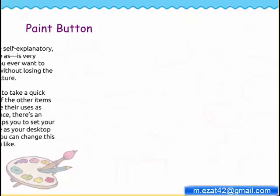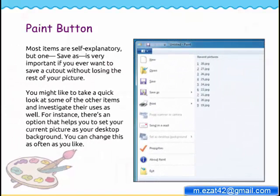Most items are self-explanatory, but one — Save As — is very important if you ever want to save a cutout without losing the rest of your picture. You might like to take a quick look at some of the other items and investigate their uses as well. For instance, there's an option that helps you set your current picture as your desktop background. You can change this as often as you like.